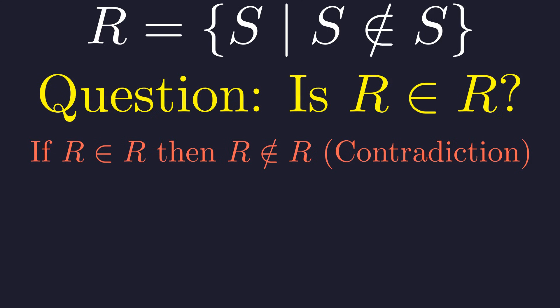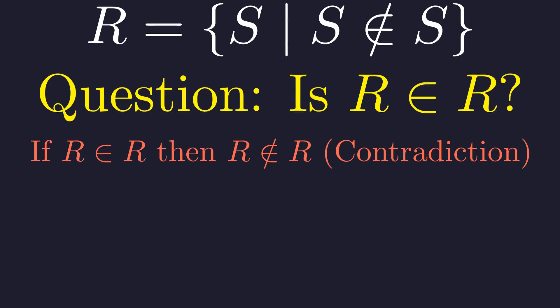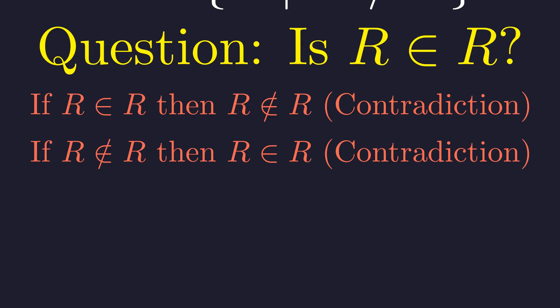If R is in R, then it must satisfy the condition for membership, which is that it must not contain itself—a contradiction. If R is not in R, then it is a set that does not contain itself, so by definition it must belong in R—another contradiction. This paradox broke naive set theory.